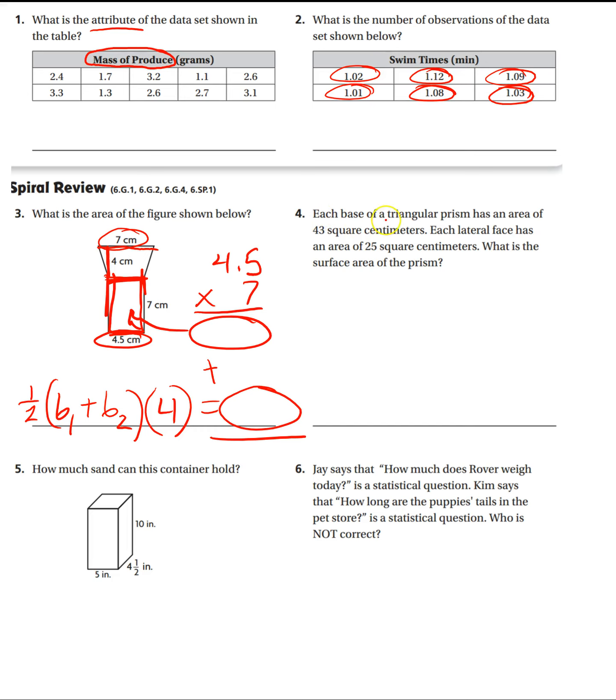All right, number four. Each base of a triangular prism, okay, so it's got triangles on either side and then rectangles around. It has an area of 43 square centimeters, so the bases. We draw this out, a triangle base, triangle base, the triangles are going to have area of 43.